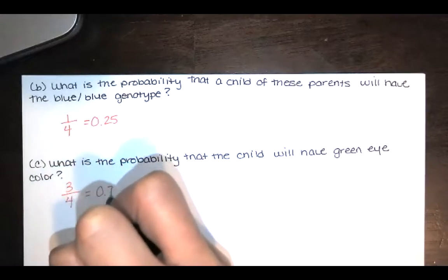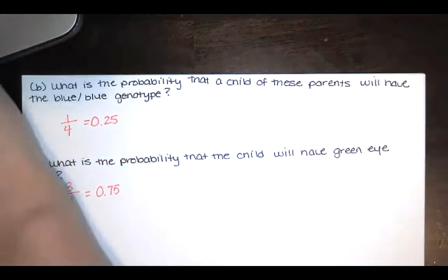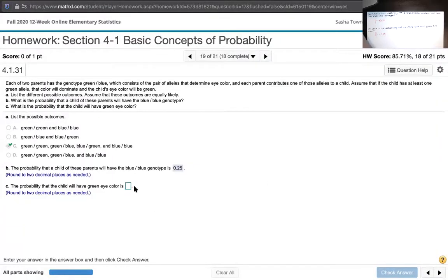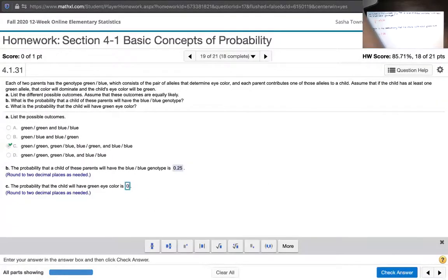And we know that three out of four is 75% or 0.75. So we'll just type that in over here, round to two decimal places as needed. And that's it. Very simple.